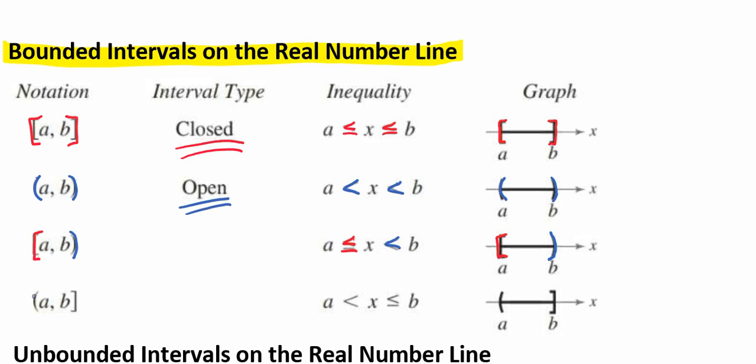And that can go the other way too. We might have a parentheses on our A endpoint and a bracket on our B endpoint. Again, this is neither open nor closed for the interval type. We would write that A is less than X, which is less than or equal to B. When we graph that, we would have a parentheses for our A and a bracket for our B. It's important to note that the end points of the closed interval are included in the interval, and the end points of an open interval are not included.